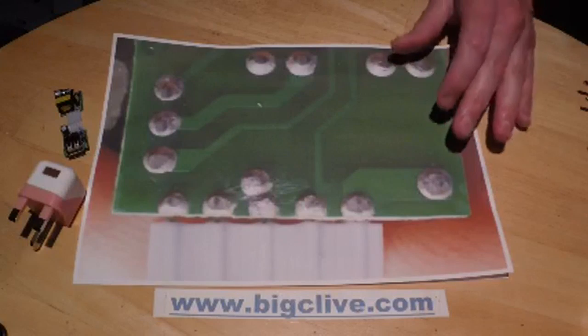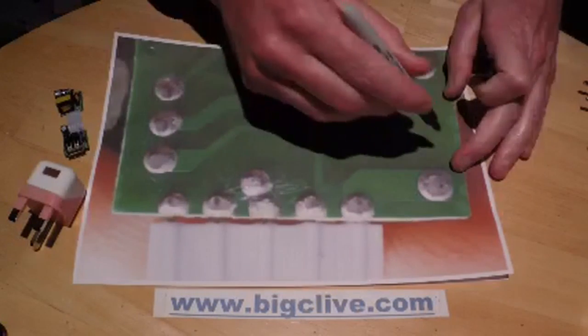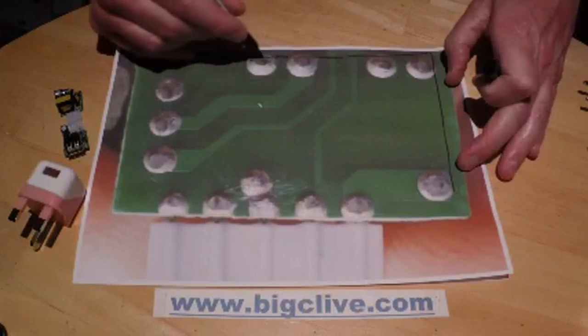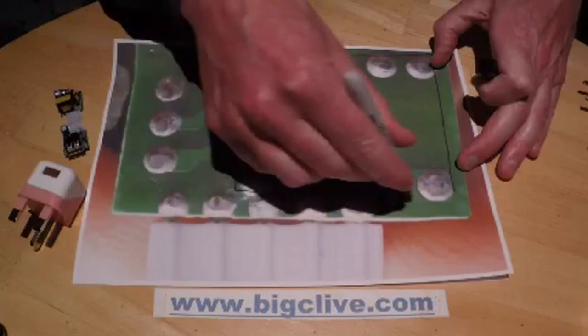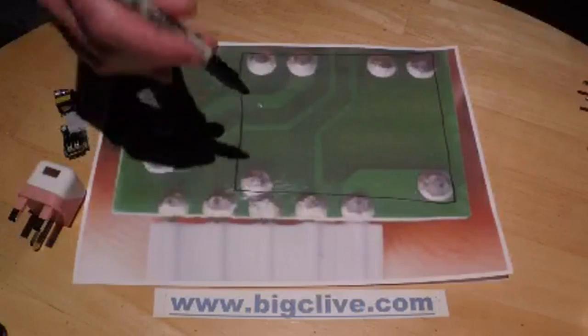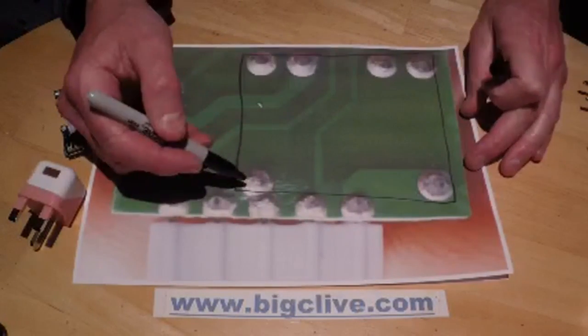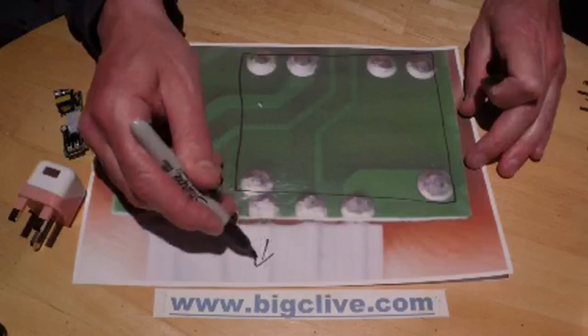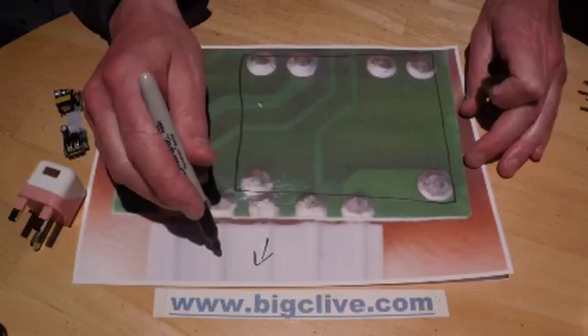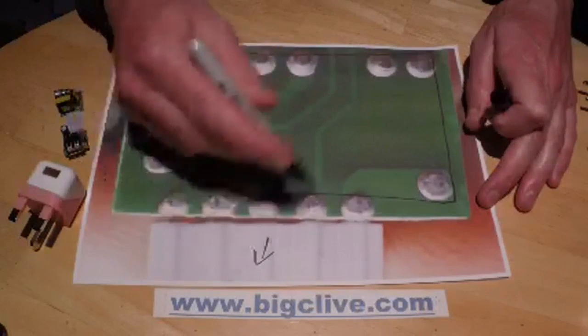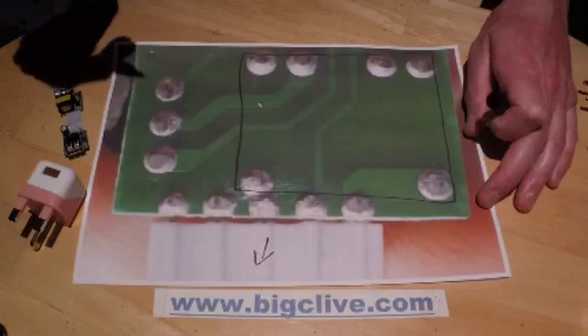And what we've got here is this is actually a transformer, the output transformer, that's putting the low voltage, it steps the voltage down, and it's putting it out along this ribbon cable to the USB connector. And there's also feedback, unfortunately, coming at mains voltage.